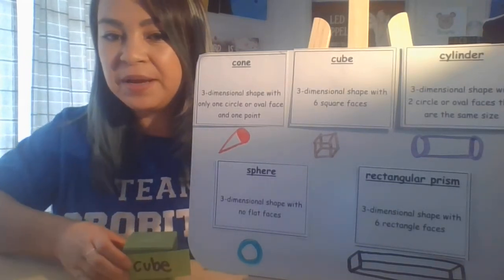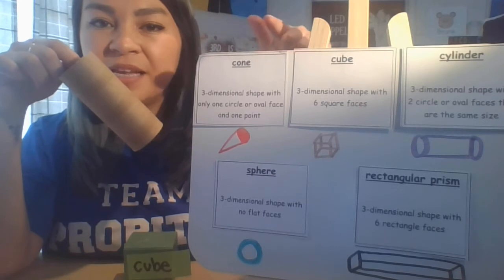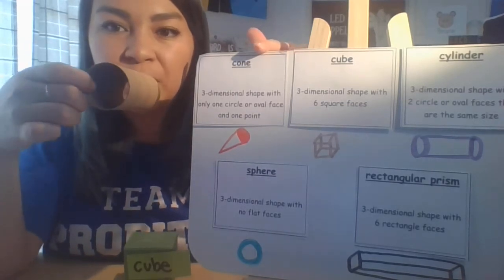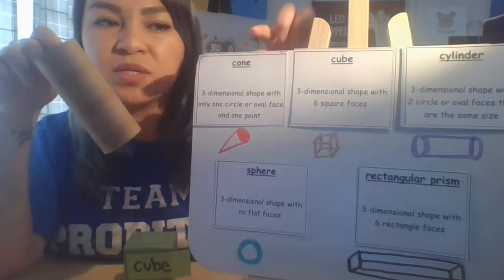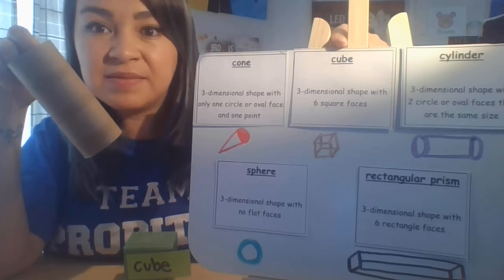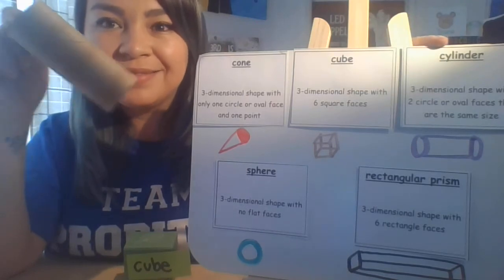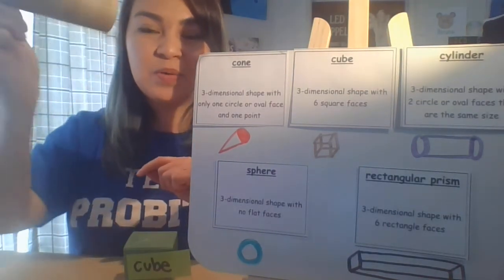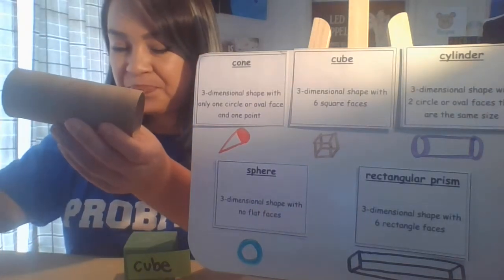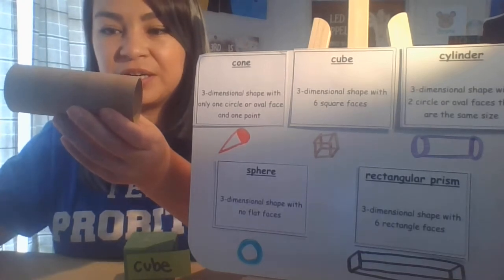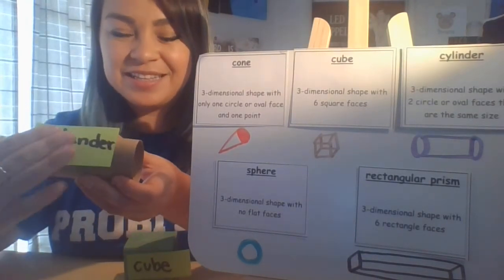Let's look for our next shape. Let's take a look at this. Is this a cone? Do we see one oval part? I see an oval part, but is there a point at either end? No. So it's not a cone. Is it a cube? Does it have 6 faces? Nope. It has 2 equal oval parts. This is a cylinder. Say it with me — it is a cylinder. Good job.